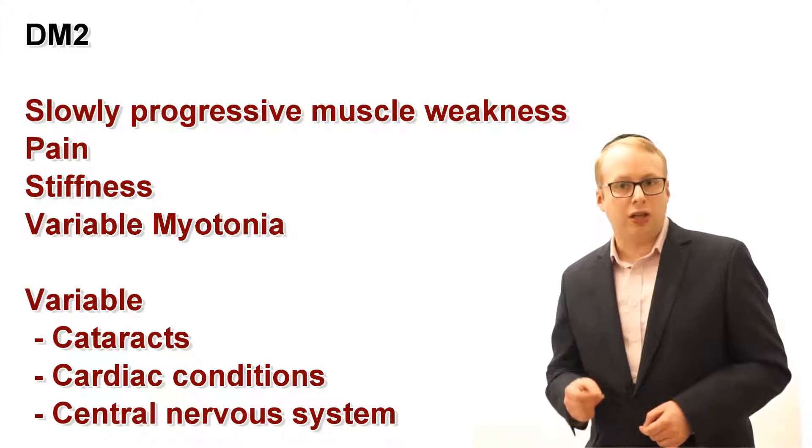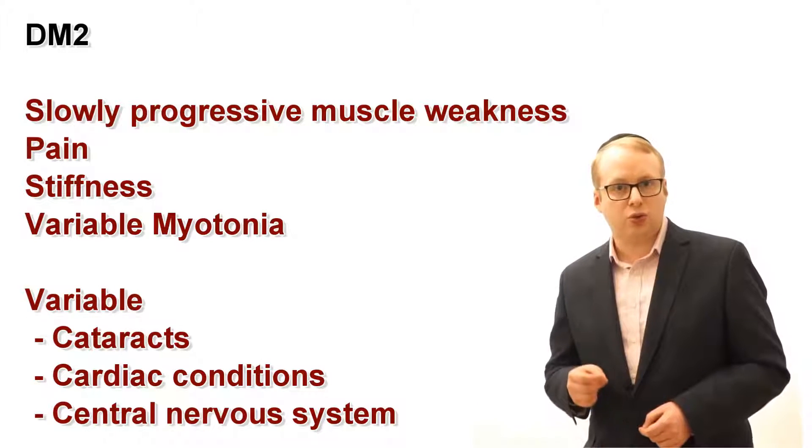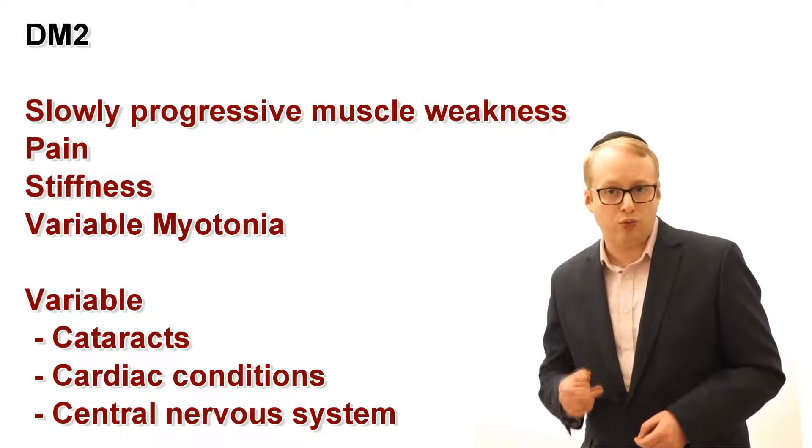Cardiac conduction issues are less frequent and central nervous system impairment is in fact very rare. The most important diagnostic tests are genetic studies looking for the CTG or the CCTG repeat with PCR and Southern blotting analysis depending on the anticipated repeat length. EMG and muscle biopsy can also be helpful but given the advent of genetics-based diagnosis these now tend to be used for screening purposes or when other conditions have also been a consideration.